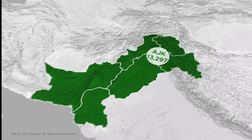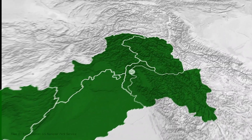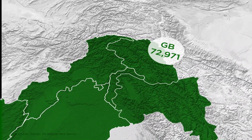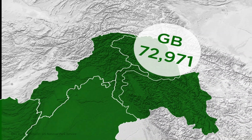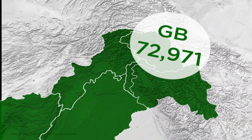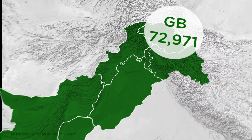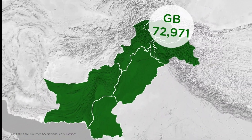Gilgit-Baltistan's area is 72,971 square kilometers.